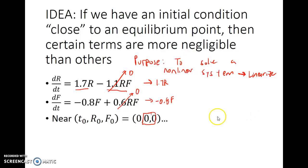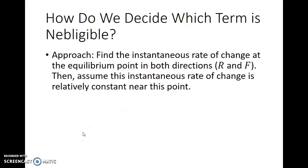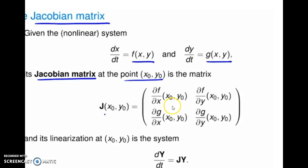All right, so this is just kind of the intuition behind it. What can we basically omit or how can we modify the model? Now, it's going to be an estimate. It's not going to be exact, but it will allow us to get a solvable model. So how are we going to do this? How do we decide which terms are negligible? Well, the idea is kind of by using the concept of the derivative. So find the instantaneous rate of change at the equilibrium point in both directions, in the R direction and the F direction. Then assume this instantaneous rate of change is relatively constant near this point.